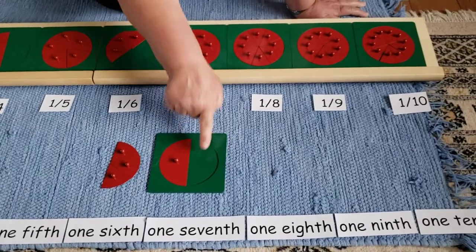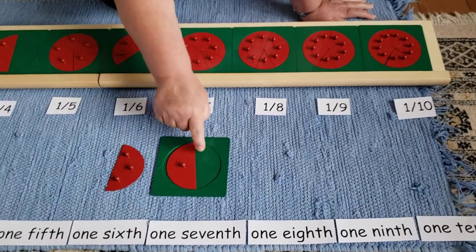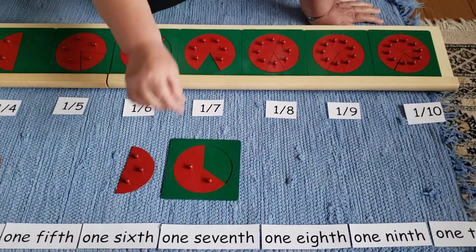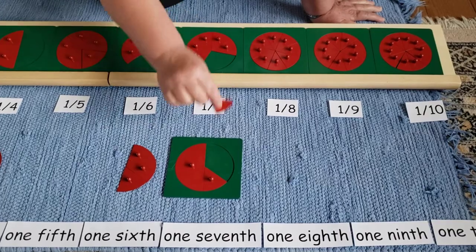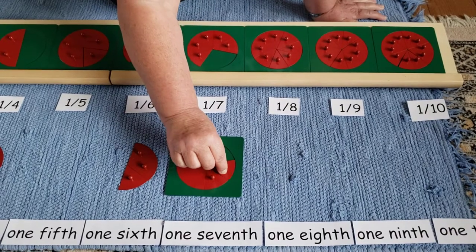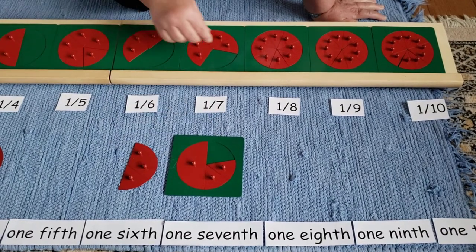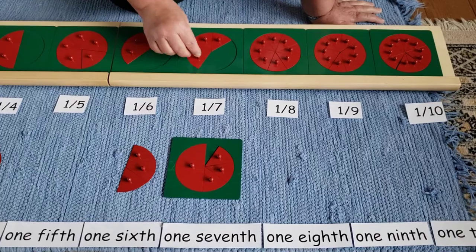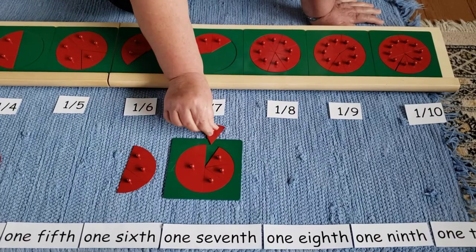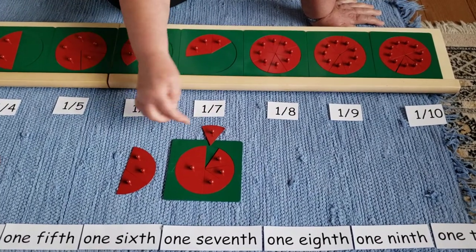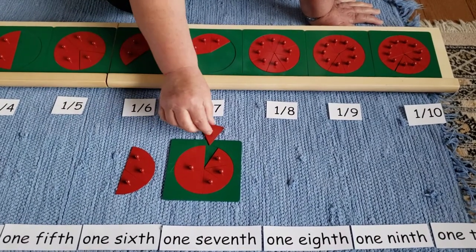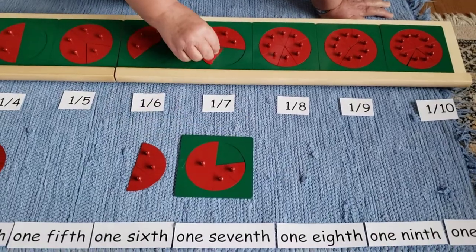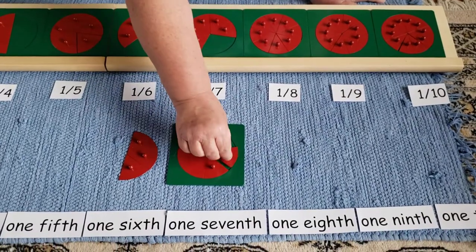Can we make sevenths fit in this side? Let's try. One seventh, two sevenths, three sevenths. This piece is too big, it's not going to fit. So sevenths won't work.